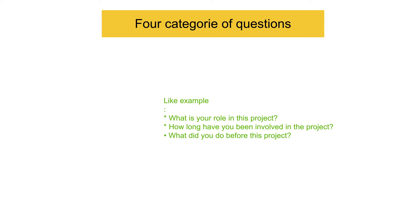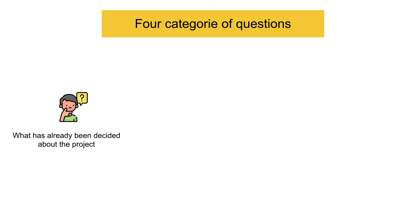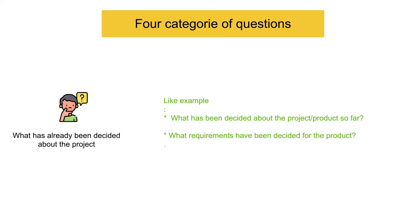Type three is what has already been decided about the project. If you know the constraints of the project, it's easier to decide how ambitious you can be about research and resulting design changes. For example: What has been decided about the project so far? What requirements have been decided for the product? What tech decisions have been made and how firm are they?